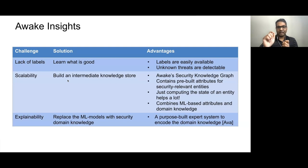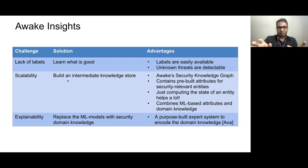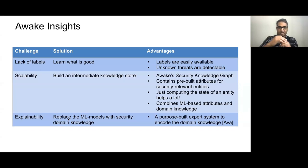We encode all that knowledge in the knowledge graph. What we found is that just encoding the state of an entity — like whether a user is logged out versus logged in — is really helpful for scaling this solution. The advantage of this integrated store is that you don't have to depend on one technique to address all threats. You can mix and match: this attribute of this entity can be inferred by ML or by domain knowledge, and you can combine them. Finally, since the knowledge graph encodes a lot of enterprise knowledge, security analysts can write heuristics on top of it using their domain knowledge to detect threats.